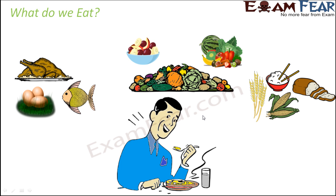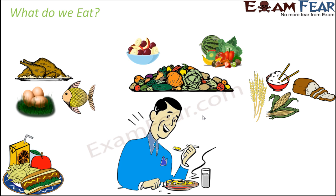We also eat a lot of cereals like bread, chapati, rice, maize, and corn — all of these are cereal grains. In fact, rice and chapati form the most basic food, or the staple food, for human beings.